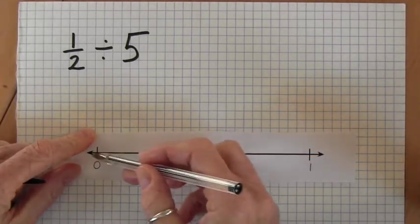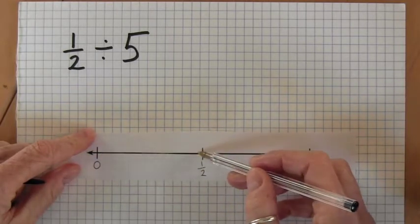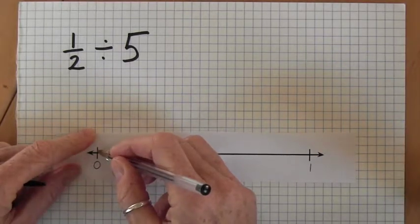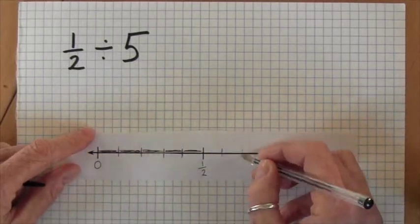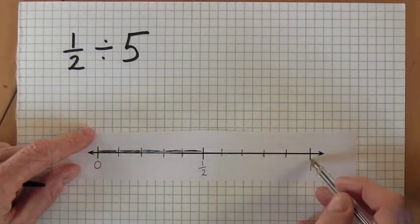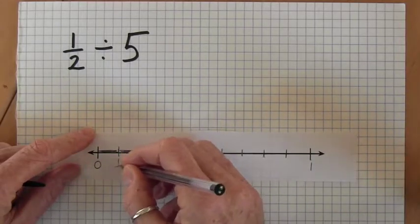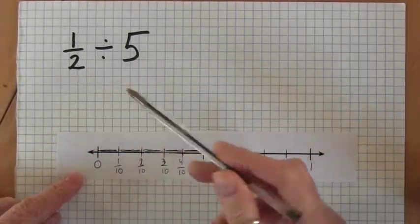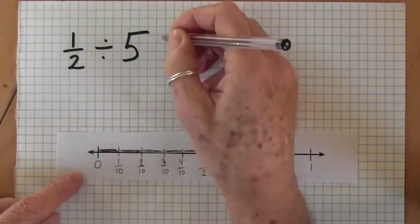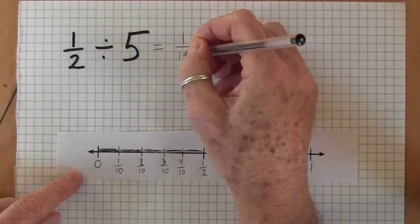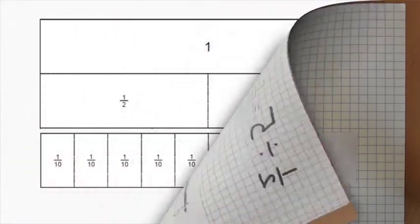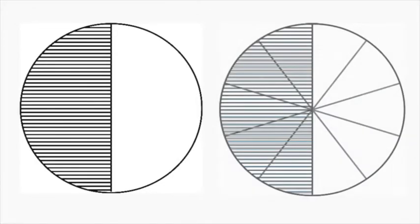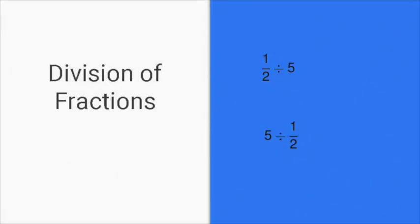The distance they ran is represented as a straight line, and I need to divide it into five equal parts. When I continue to partition the whole, I can see there are ten of these parts, so each one is one tenth of a mile. Using this number line, each student will run one tenth of a mile — so one half divided by five equals one tenth. You could also solve this with a fraction kit, fraction circles, or fraction bars.